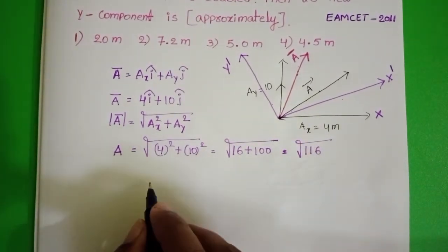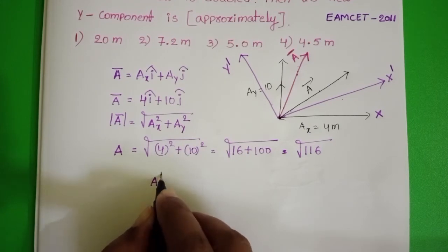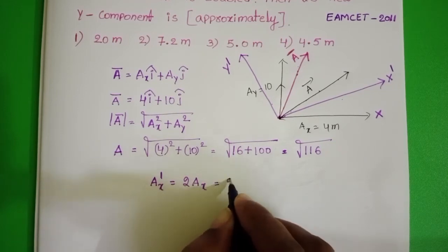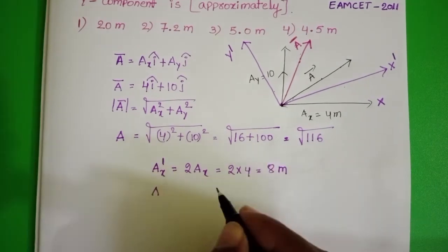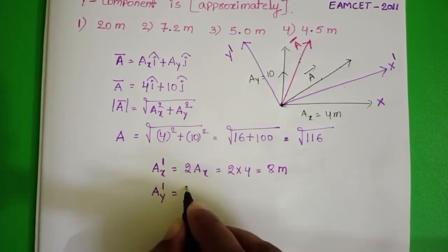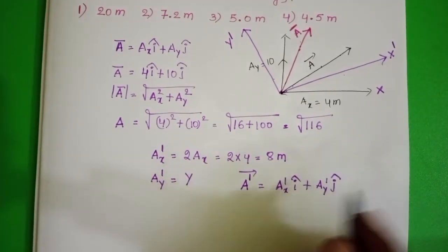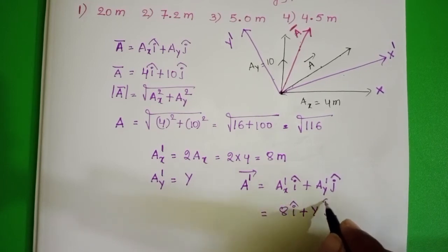After rotation, the new x component of the vector — let it be ax dash — is doubled. So ax dash equals 2 into ax, that is 2 into 4, equals 8 meters. We have to find the new y component of the vector — let it be y. The new vector is 8i cap plus y j cap.